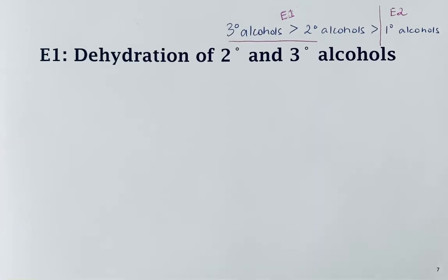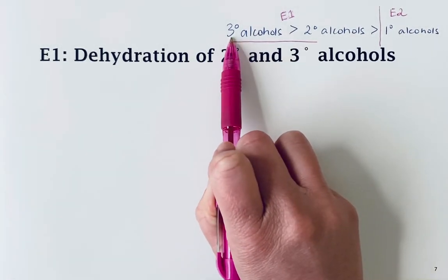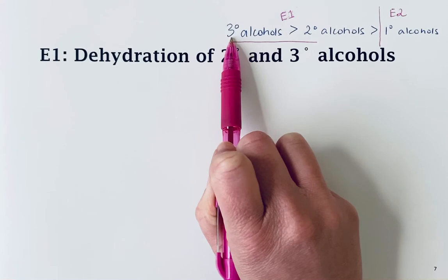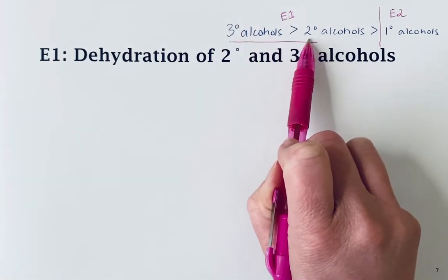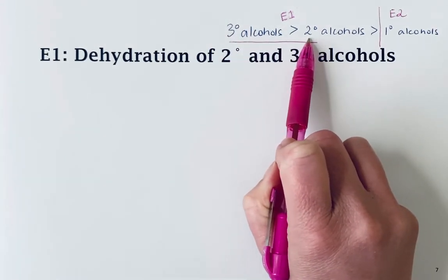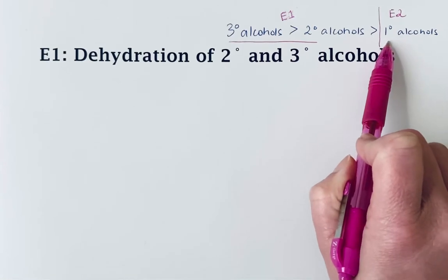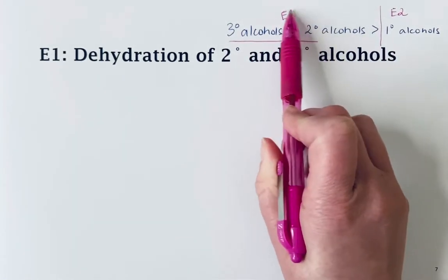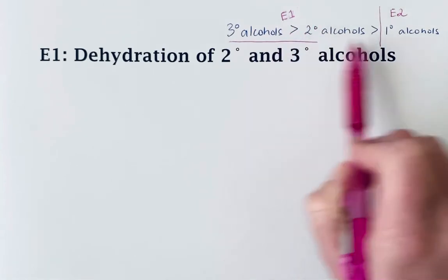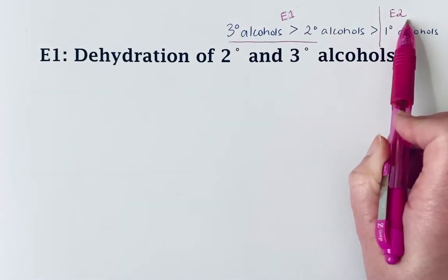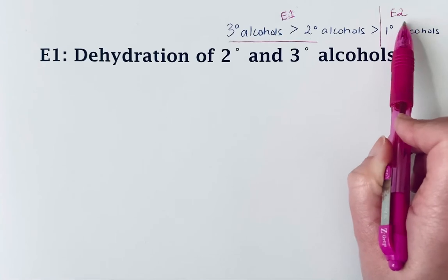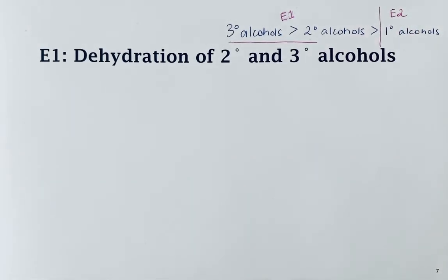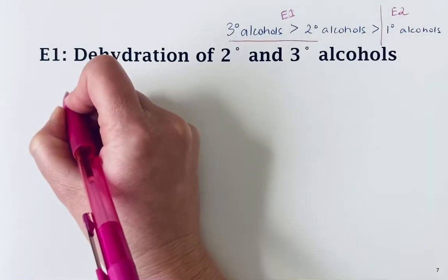Tertiary alcohols undergo elimination reactions faster than secondary alcohols, which react faster than primary alcohols. Tertiary and secondary alcohols undergo the E1 mechanism, while primary alcohols that cannot form stable carbocations eliminate via the E2 mechanism.